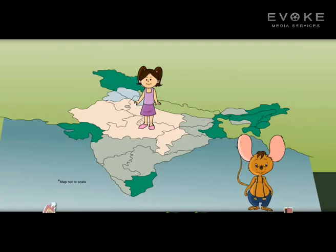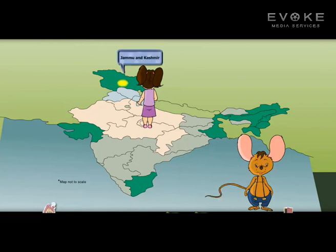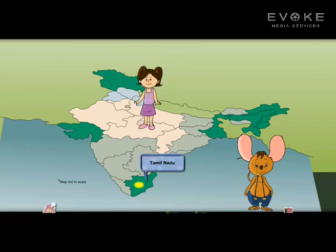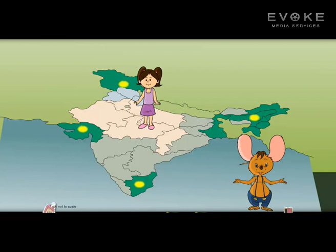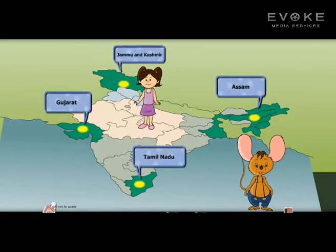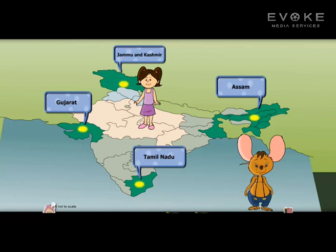Ellie is heading towards north. Which state will she visit? She is now heading south. Which state will she go to now? How about doing this once more? Ellie is waiting. Now she is heading east. Where will she go? Great! Ellie wants to go west now. Watch her visit a state in West India.